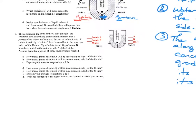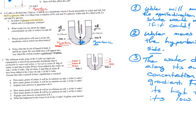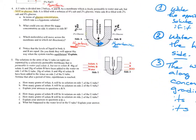Notice that the levels of liquid in both A and B are equal. Is it going to be equal once osmosis is done? Which side's going to be higher? The hypertonic side is going to be higher, because water's going to move toward the higher solute concentration — so you go up on that side and down on the other.